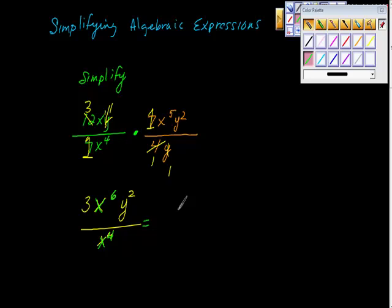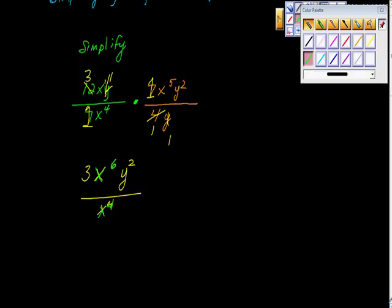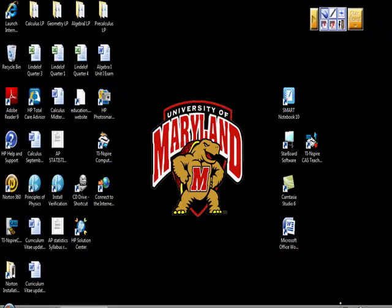And X to the 6th over X to the 4th is what? It's X squared, so we have... I'm just going to bring it down again, Joel, if you don't mind. It's going to be 3X squared Y squared, isn't it? Is that okay? All right, let's stop for a second, find another one to do, and then go back to this.